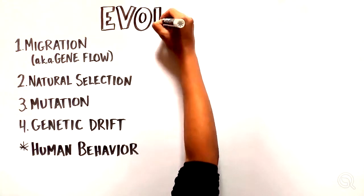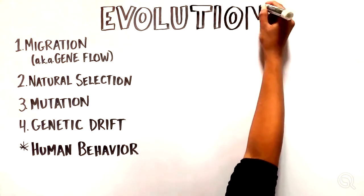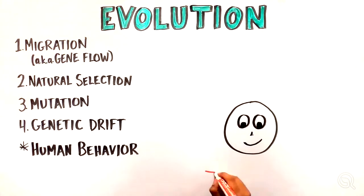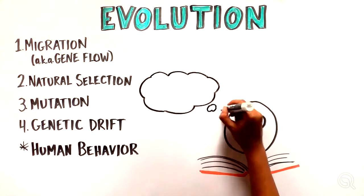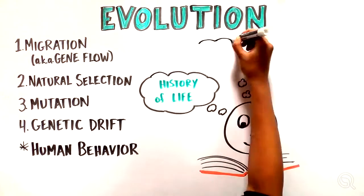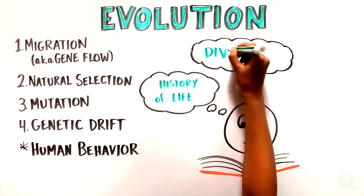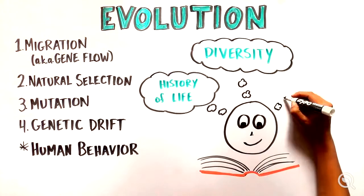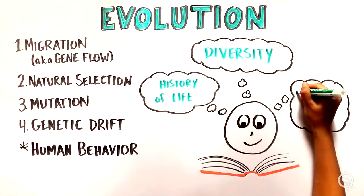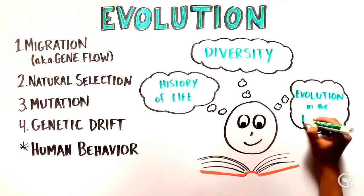As you've seen, evolution occurs from one generation to the next and is influenced by multiple factors: migration, natural selection, mutation, and genetic drift. Studying evolution allows us to understand the history of life on Earth and the remarkable diversity that comes with it, as well as providing a framework for thinking about evolution in future generations.